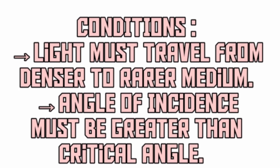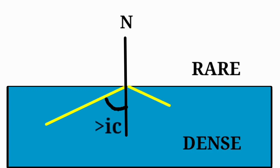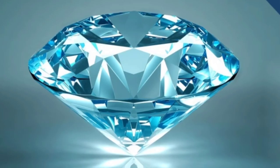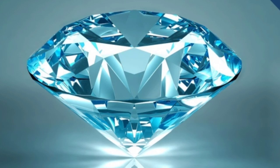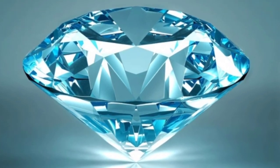Total internal reflection has two conditions. First, the light must travel from a denser to a rarer medium. Second, the angle of incidence must be greater than the critical angle. When both conditions are satisfied, we see total internal reflection. If we look at a single diamond, we will see total internal reflection.